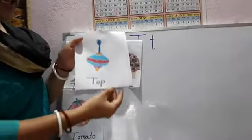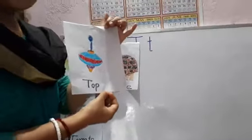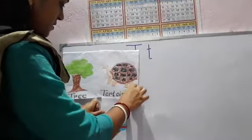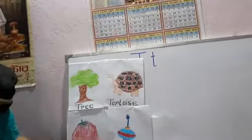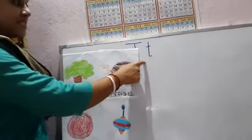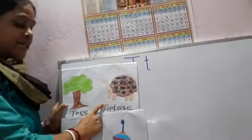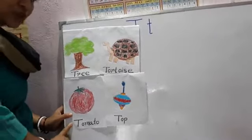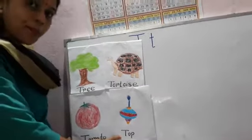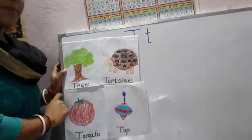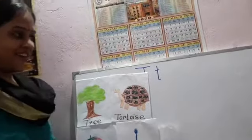Tee-ta-ta-top. Say with me: Tee-ta-ta-tree. Tee-ta-ta-tortoise. Tee-ta-ta-tomato. Tee-ta-ta-top. Tree — let's plant trees and make our world evergreen.